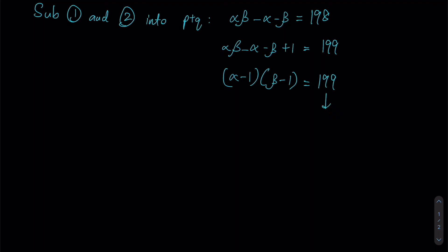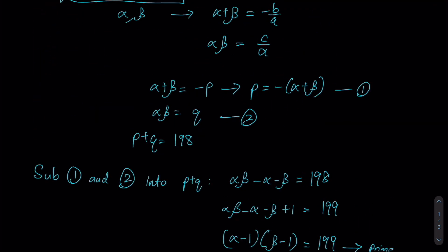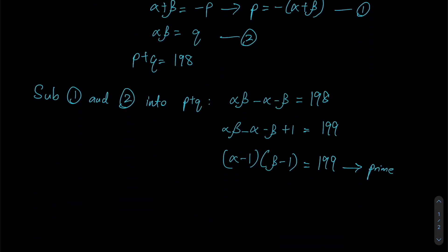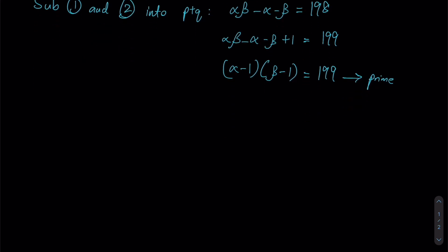If you try to prime factorize 199, you realize that you won't be able to find any prime factors. That is because 199 itself is in fact a prime number, which means that 199 can only be expressed as a product of 1 and 199 themselves. Since we are looking for integer solutions, it is necessary that α and β must both be integers. Hence it is possible that this can be written as 1 × 199 or -1 × -199.